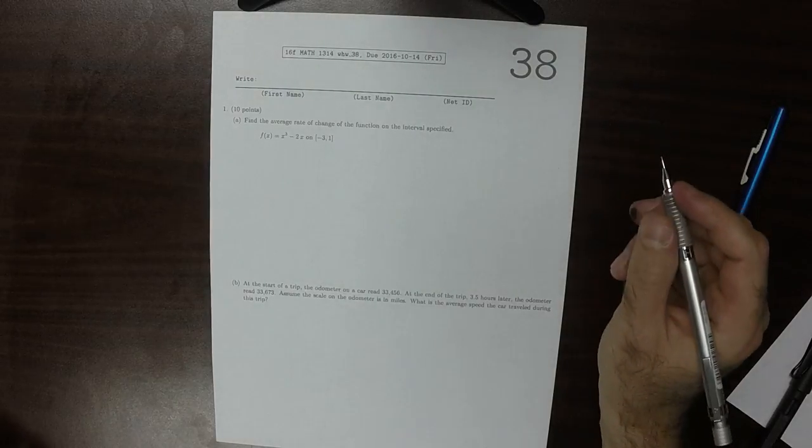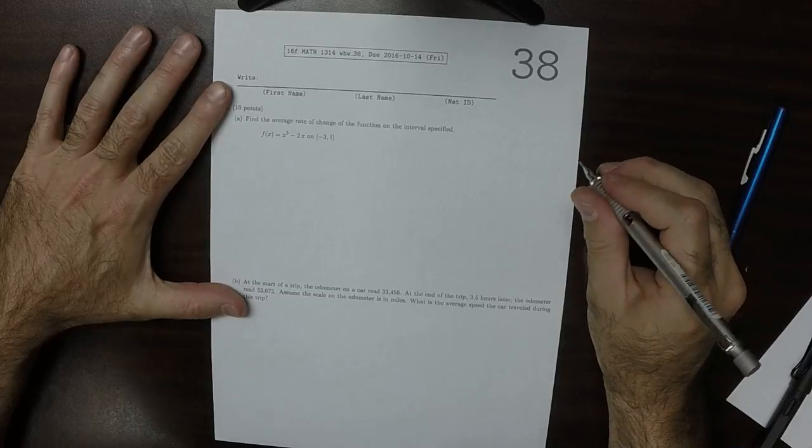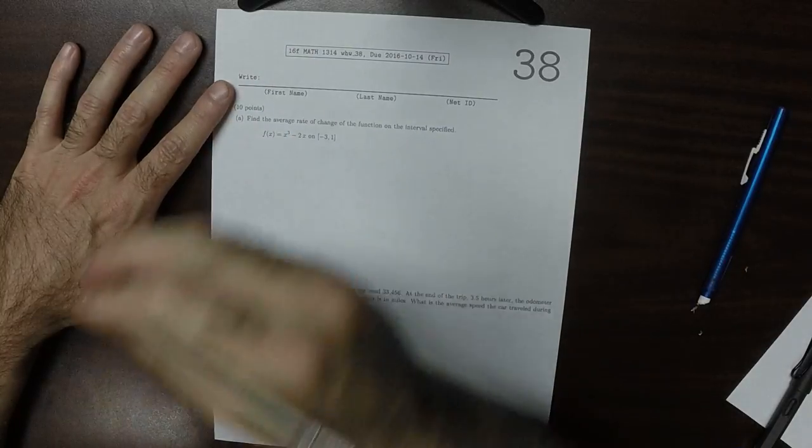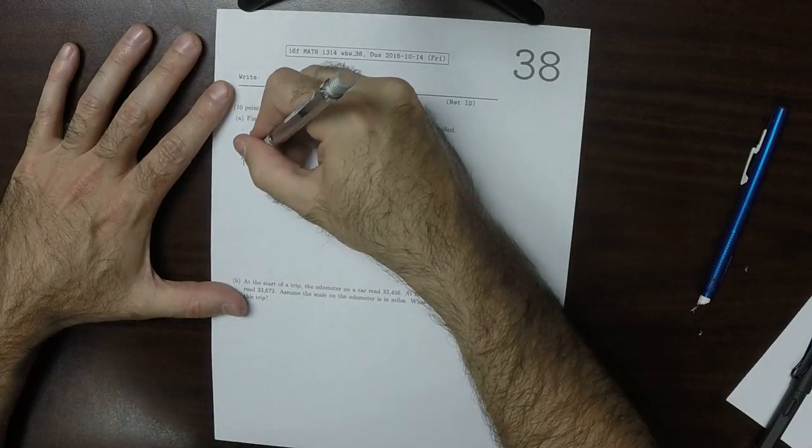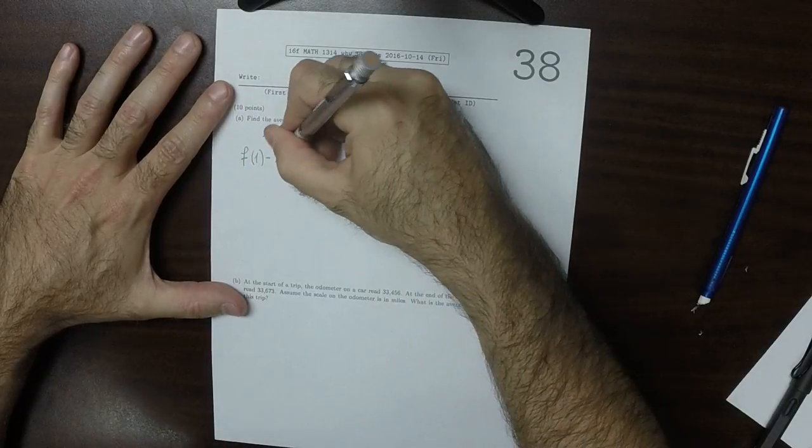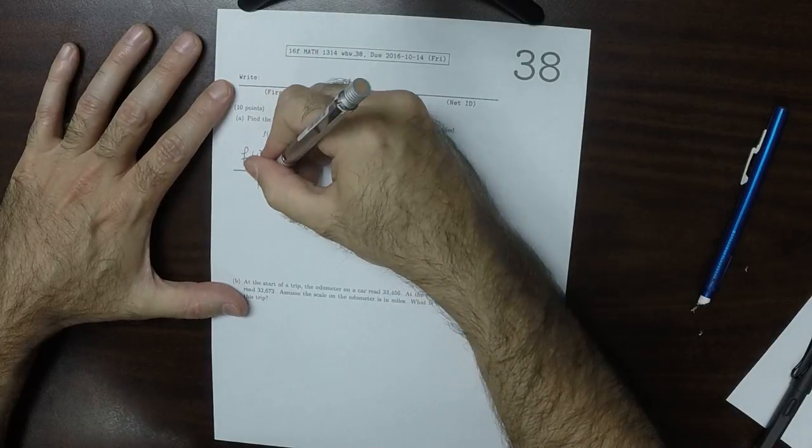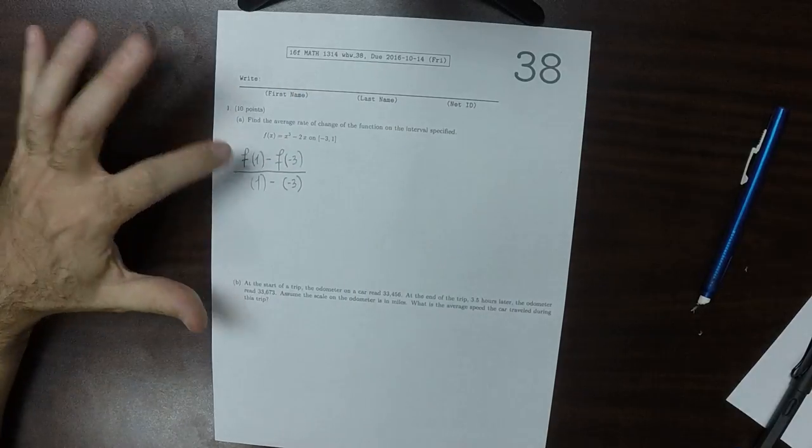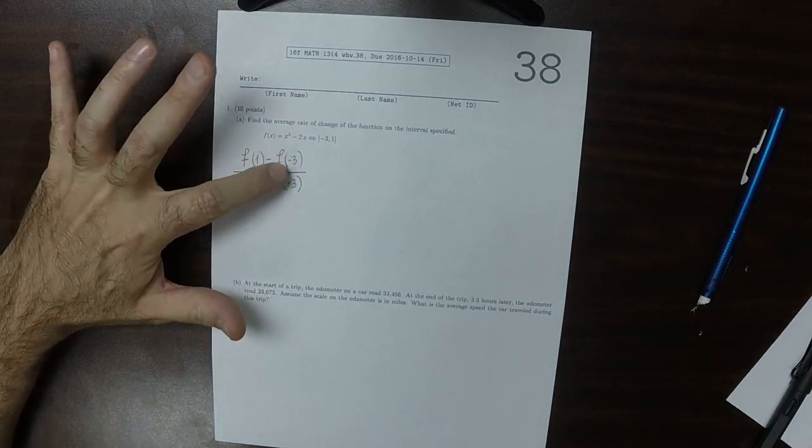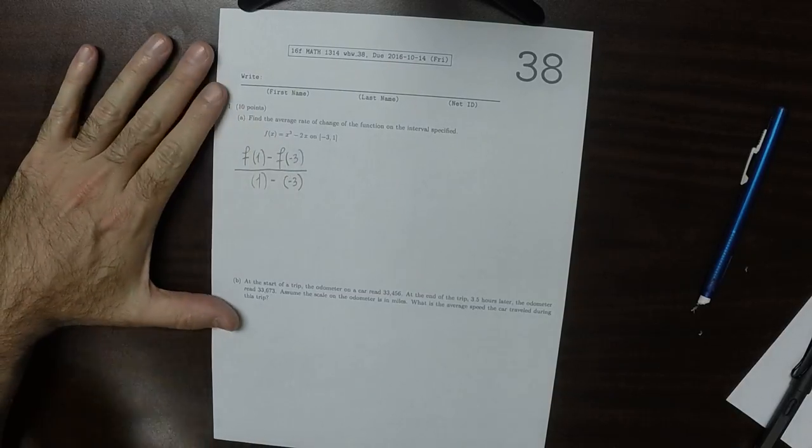This is the solution to written homework 38. The formula for this is f of 1 minus f of negative 3, and then we need to divide this by 1 minus negative 3. So notice the ones line up and the negative 3s line up. This is the expression we need to evaluate.